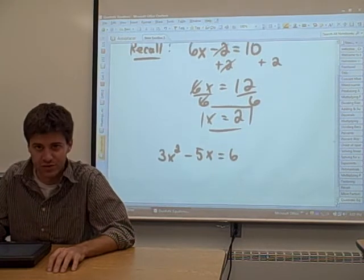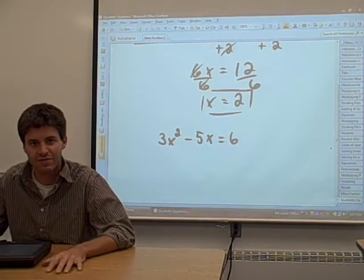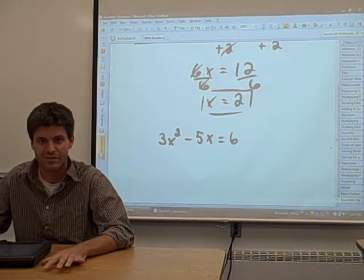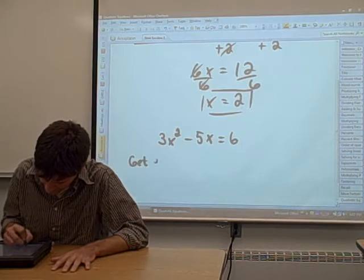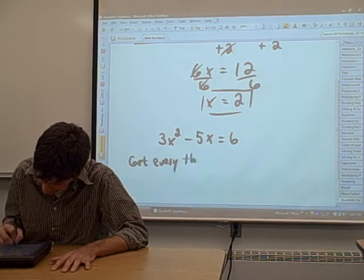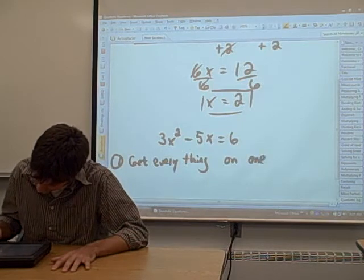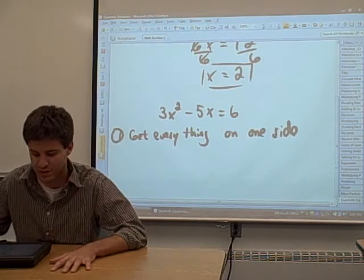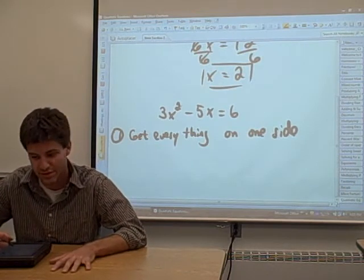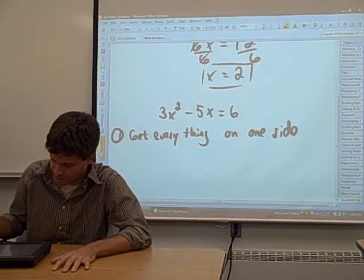Now, the way that we solve this quadratic equation, there are a couple steps. The first step is get everything on one side of the equation. Everything, whether it has an x in it or not. So we want to get everything on one side. This is our first step whenever we're solving a quadratic equation. Whenever you see an x squared in an equation, and the square is the highest power, you want to get everything on one side of the equation.